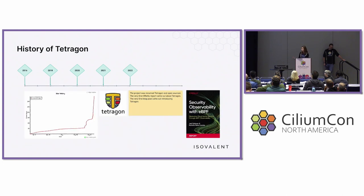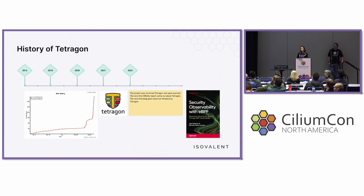In 2022, we decided to open source the project — we renamed it to Tetragon and made it open source. The GitHub stars you see on the slide reflect what happened at KubeCon EU 2022 in Valencia — it gained a lot of traction. That was also when the first blog post and the first O'Reilly report came out on Tetragon. If you want to get an O'Reilly report, come to our booth — we'll be handing them out.